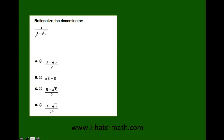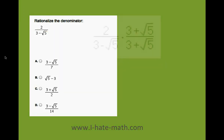So let's say that you have a question like this: 2 over 3 minus the square root of 5, and they ask you to rationalize the denominator. Anytime they ask you to rationalize, what you need to do is multiply this expression by the conjugate. But what is a conjugate? The conjugate is going to be the same expression, but instead of negative we're going to put a positive.